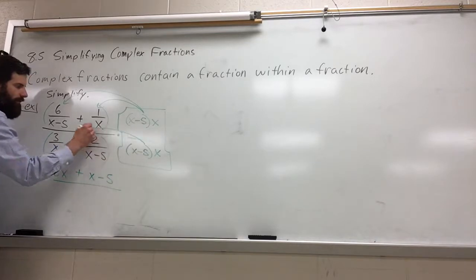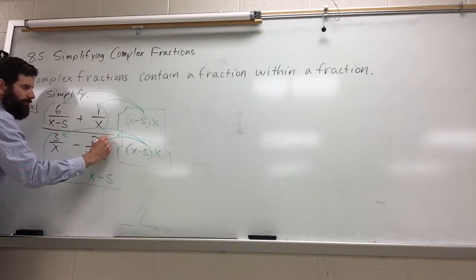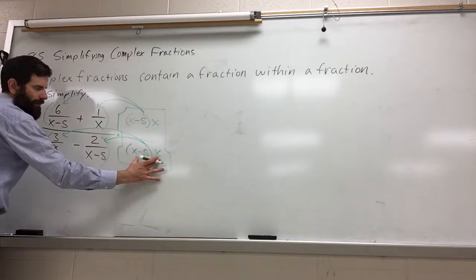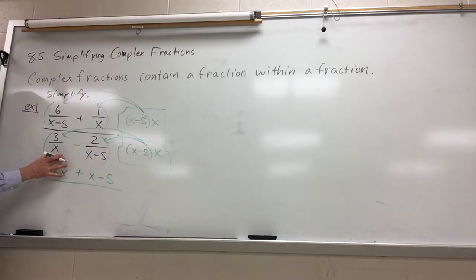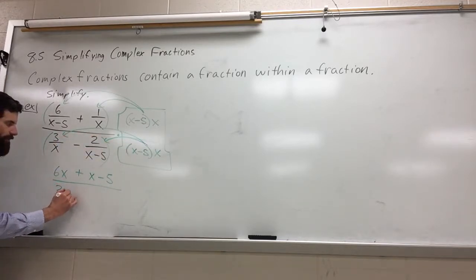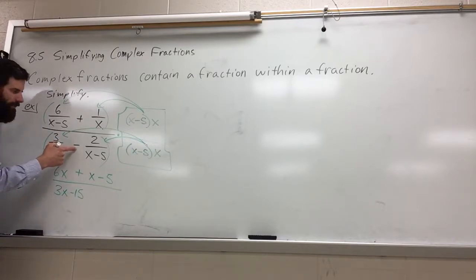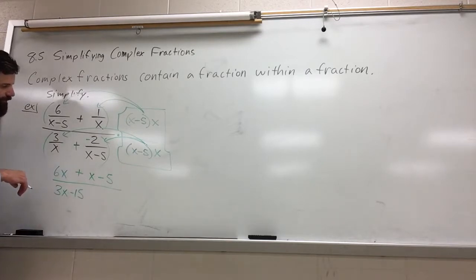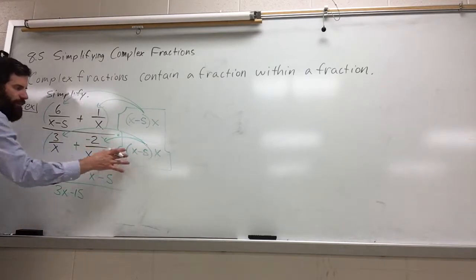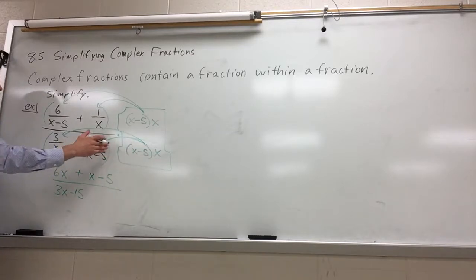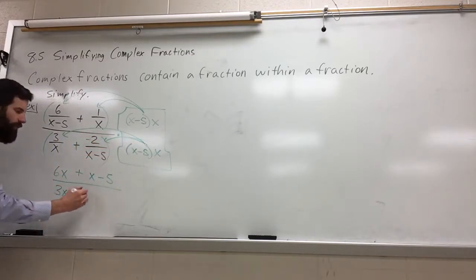Now we move to our denominator. Same sort of setup. x minus 5 times x multiplies here, the x's go away, and we're left with a 3 that distributes with the x minus 5. So 3x minus 15. I get nervous sometimes with this negative, I'm going to do the plus negative. I like to be on the safe side. When this multiplies here, the x minus 5s divide out. We're left with a negative 2x.